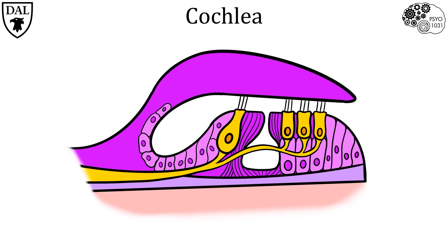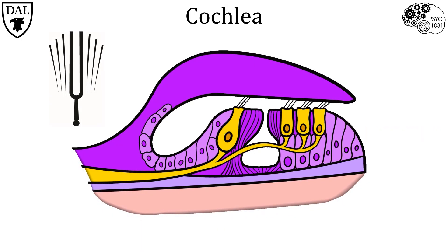When sound waves reach the inner ear, they initiate vibrations of the oval window, which then produces waves that travel through the fluid-filled cochlear duct. You can imagine ocean waves closing in on shore, or a wave pool where the wave-generating engine is the oval window. As the wave passes through the cochlear canal, it initiates movements in the basilar membrane. The basilar membrane is fairly flexible, so it is able to move in response to wave propagation. On the other hand, the tectoral membrane is stiff and therefore is not able to move in response to wave propagation. Thus, in the presence of sound waves, the basilar membrane moves up and down under the stationary tectoral membrane.